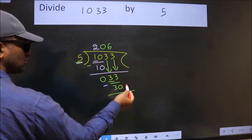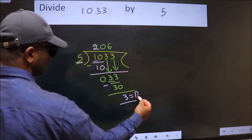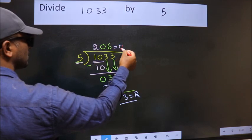No more numbers to bring down, so we stop here. This is our remainder, and this is our quotient.